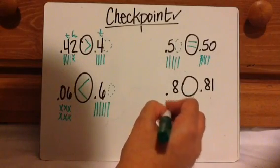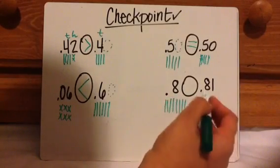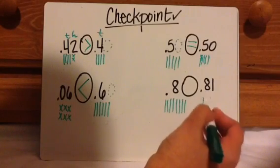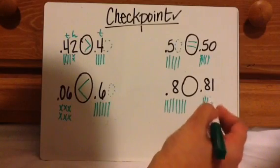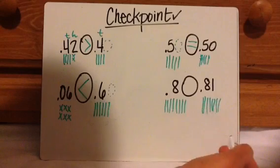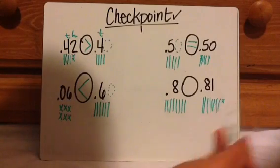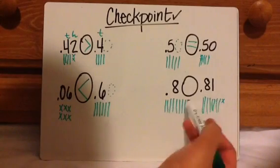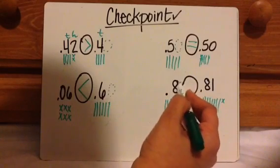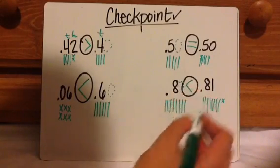And then eight tenths — one, two, three, four, five, six, seven, eight. And then eighty-one hundredths — so imagine these are all filled with x's. I can't make 81 x's — that's going to take forever. So this is barely larger than this one. If you think about it, it's like eighty cents versus eighty-one cents. So that one is greater.